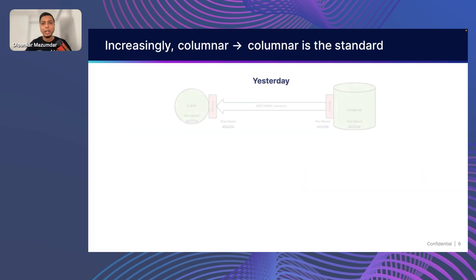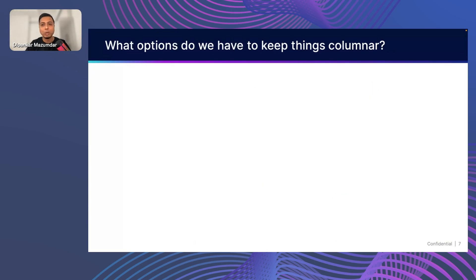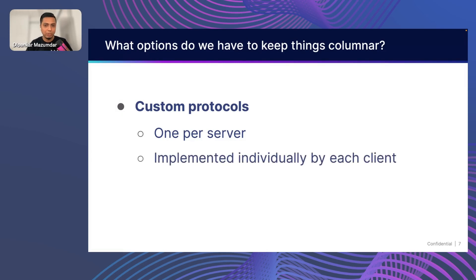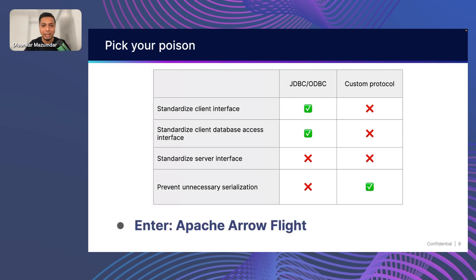Columnar is really the standard now, certainly in the OLAP analytics world. What if you could have a columnar-based transfer framework where you don't need to do that row-based conversion? One option is a custom protocol — you can build a custom connector for each client and server — but you'd end up with a many-to-many mapping. We lose the standardized client interface and the standardized server interface in this custom implementation. We would prevent the unnecessary serialization and deserialization, which is good. But that's really where Arrow Flight comes in and bridges that gap.